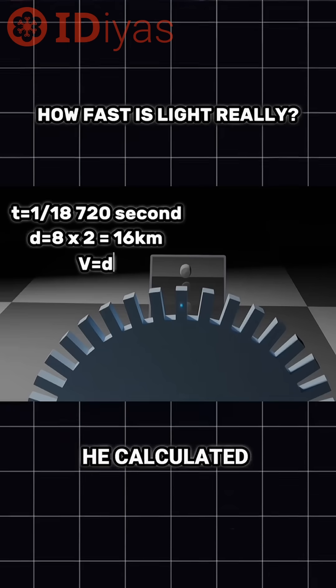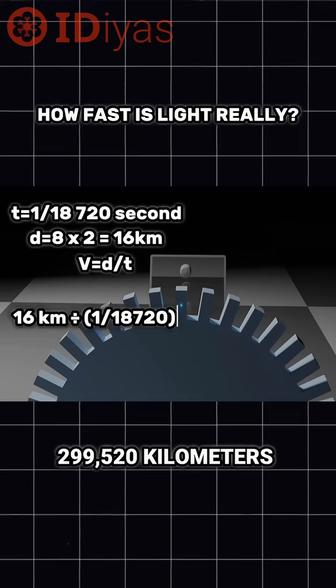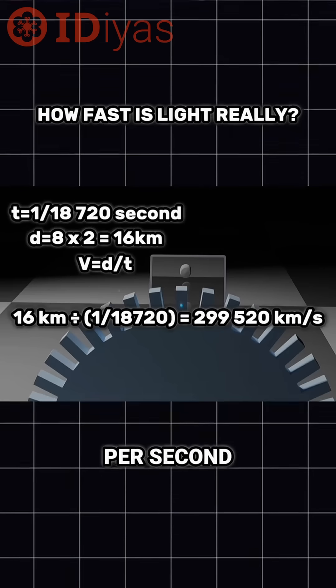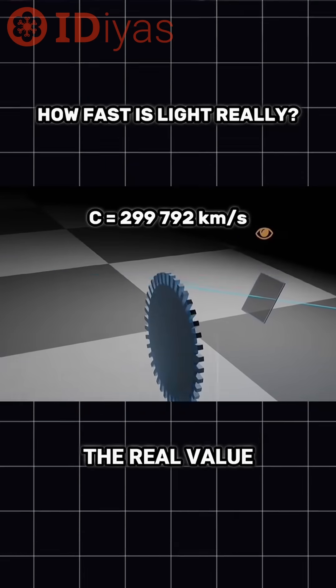Using that, he calculated the speed of light to be 299,520 kilometers per second. And that's incredibly close to the real value we know today.